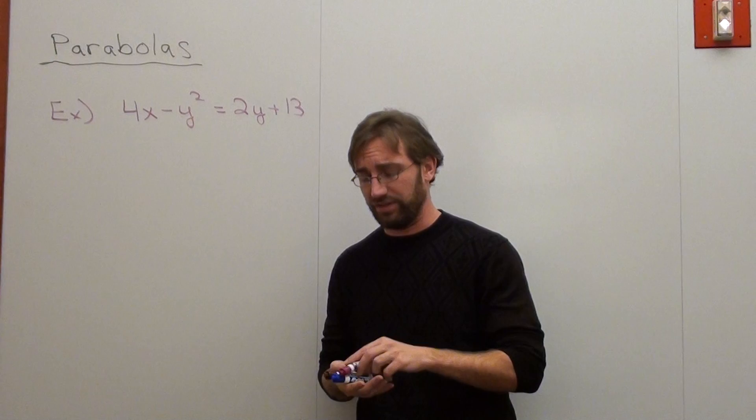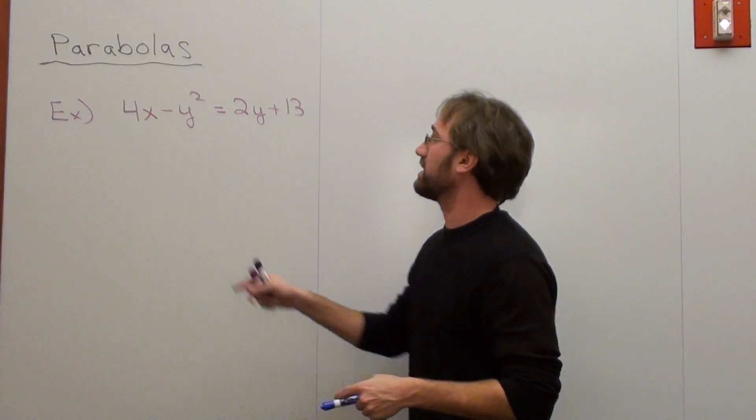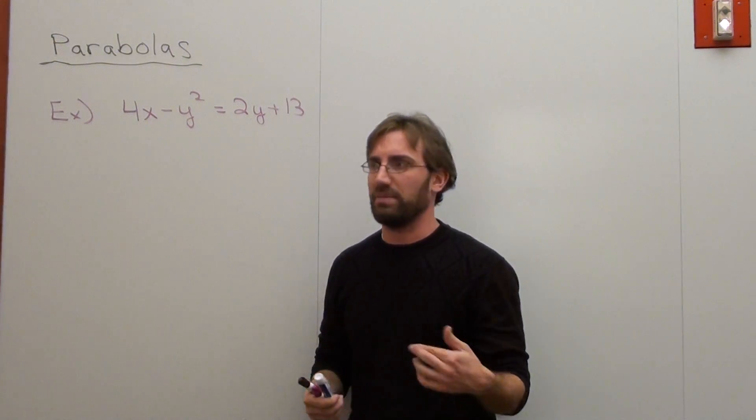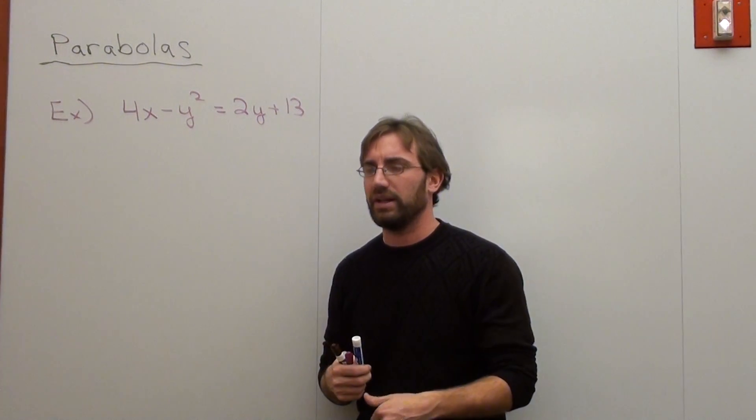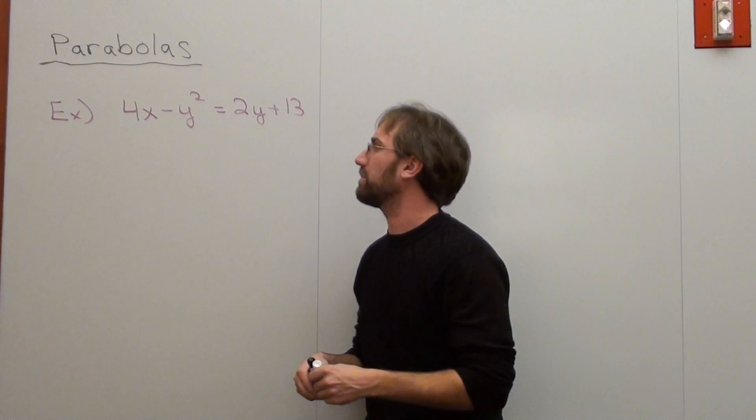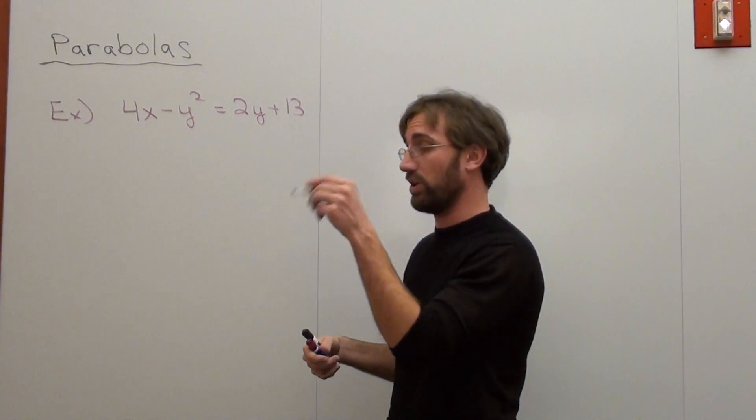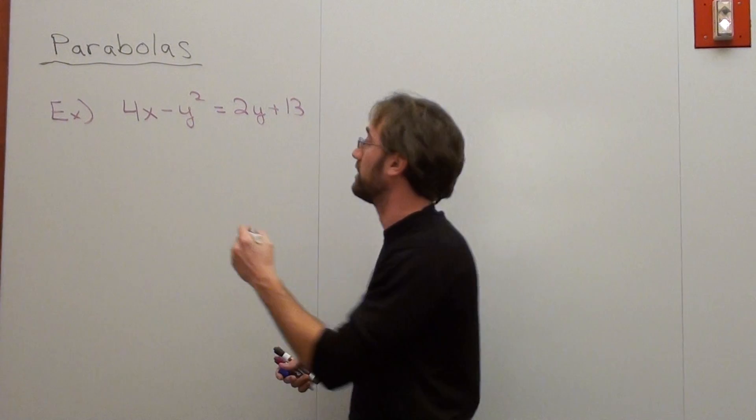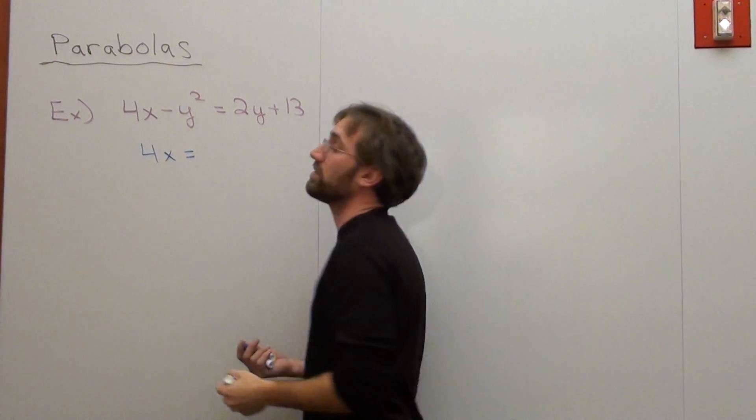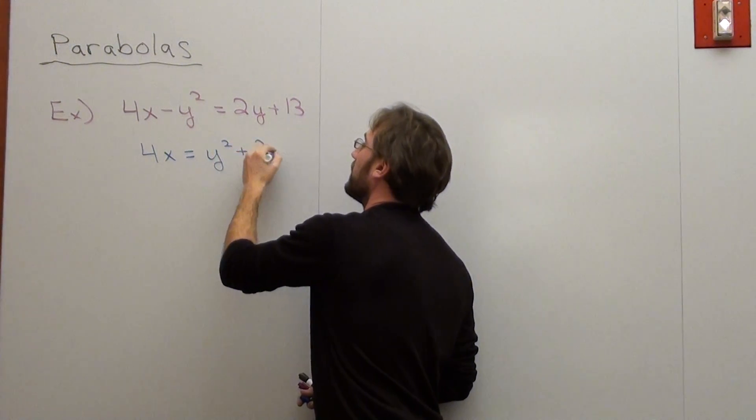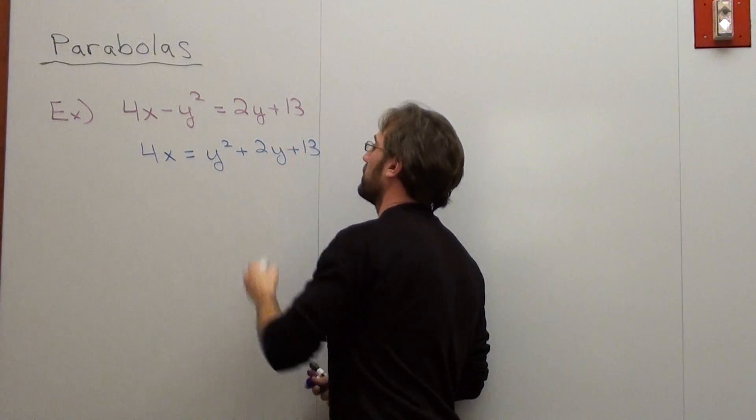So I want to get x by itself. But actually, I don't want to get x completely by itself. I want to keep the 4 with the x, not because I have to, but because it's going to make the problem a lot easier later on. And I can divide 4 out at the last step. So I'm going to add y squared to both sides. I'm going to go ahead and skip that step. So 4x equals, when I add y squared to both sides, I get y squared plus 2y plus 13.